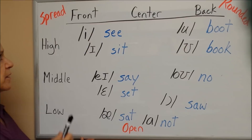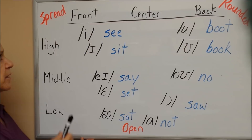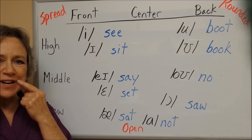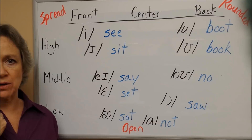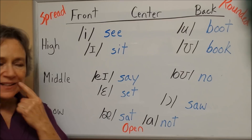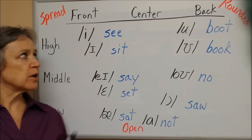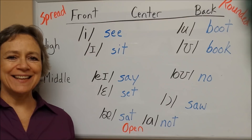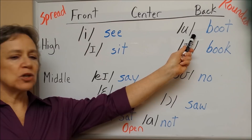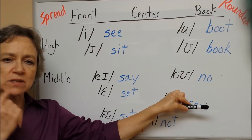Everything on this side will have somewhat rounded lips; everything on this side will have somewhat spread lips. At the bottom, the mouth is more open. I can start at the top with my lips very spread, and as I move down the chart my mouth becomes more open. Going down: ee, i, eh, eh — my mouth is opening more as I go down. For the rounded side: oo — my lips are rounded and almost closed; as I go down, my mouth opens more.